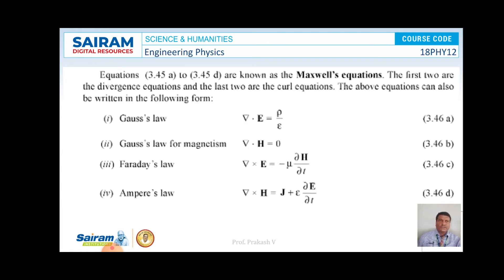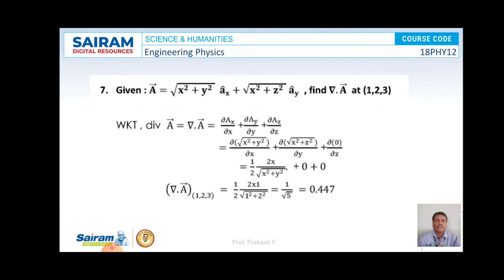According to Gauss Law, we can write ∇·E = ρ/ε; according to Gauss Law for Magnetism, we can write ∇·H = 0; according to Faraday's Law, ∇×E = −μ ∂H/∂t; and according to Ampere's Law, ∇×H = J + ε ∂E/∂t. These are all the Maxwell's equations. Now let us go to some problems.